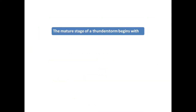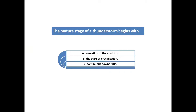The mature stage of a thunderstorm begins with — the correct answer is C. According to Chapter 12 of the Pilot's Handbook of Aeronautical Knowledge, the mature stage of a thunderstorm begins with continuous downdrafts.